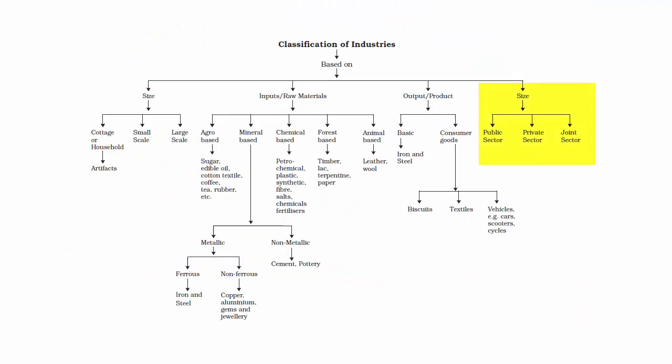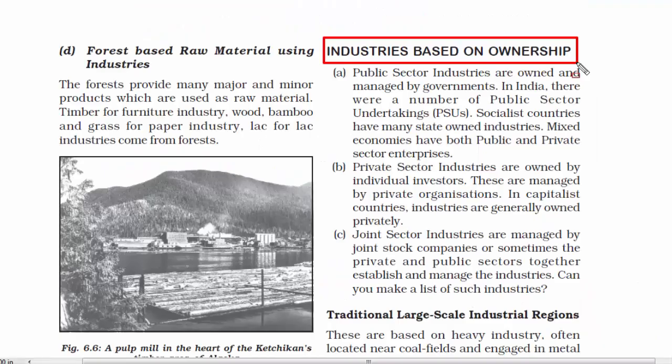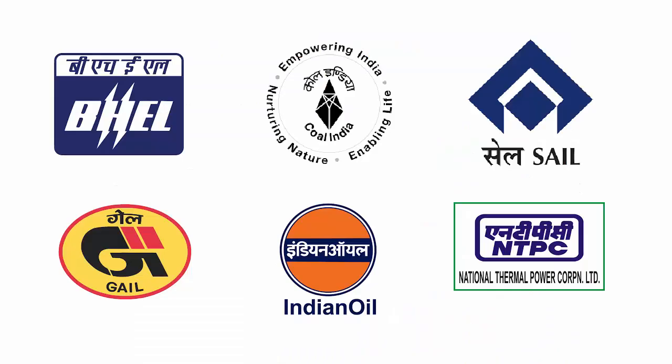Now we have industries based on ownership. The first one is public sector industries — the government is the owner, also known as public sector undertakings. Some examples are BHEL (Bharat Heavy Electricals Limited), Coal India, SAIL (Steel Authority of India), GAIL (Gas Authority of India), Indian Oil Corporation, NTPC, etc.